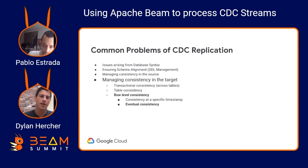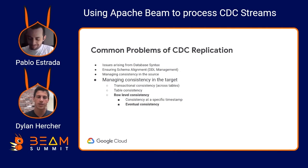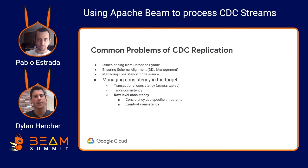For managing consistency in the target, there are a number of different approaches. That could be transactional consistency across the entire database at a transaction level, which might be across multiple tables. At a table level, you would pause replication if a table was inconsistent. But what we're going to cover today is row-level consistency and, with that, eventual consistency. The idea is that no records will be lost and order is maintained, but the data will be eventually consistent, not always perfectly consistent.